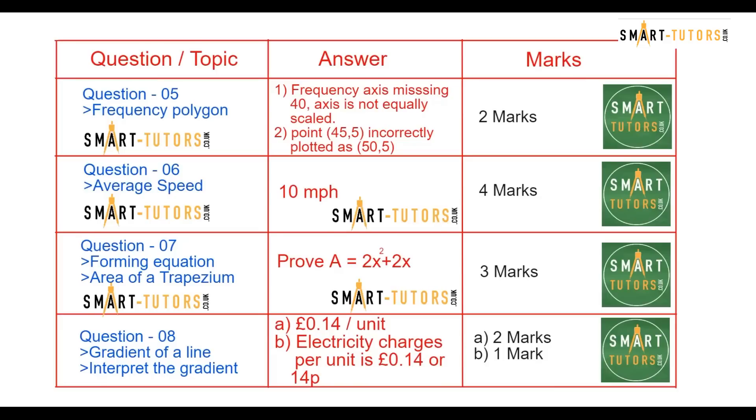Question number 7. Forming an equation, area of a trapezium. So you need to prove an algebraic equation is true. Question number 8. It's a gradient of a line. Interpret the gradient, what it means by gradient. So the answers are given in the second column.